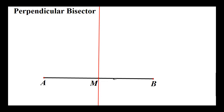Here we have a perpendicular line going through the midpoint of segment AB. In a math problem we would mark this with a tick mark to show that AM is congruent to MB, and we would also mark the angle to show it's 90 degrees, meaning this line and this line segment are perpendicular to each other.